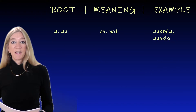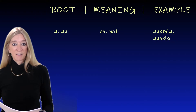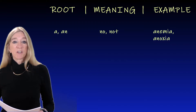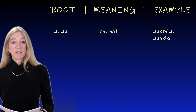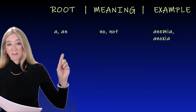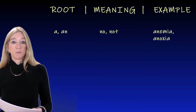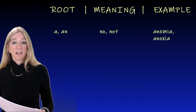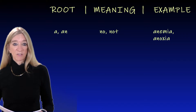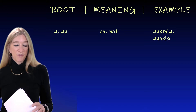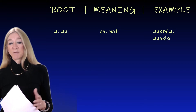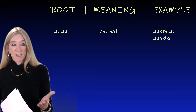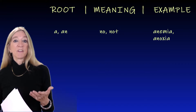The next root is 'a' or 'an,' meaning no or not. Examples are anemia and anoxia. You'll find that '-emia' is always a reference to blood: anemia, a lack of blood; anoxia, a lack of oxygen. That's another root for which you can think of numerous examples in everyday language, such as amoral — not moral — and anonymous, having no name.